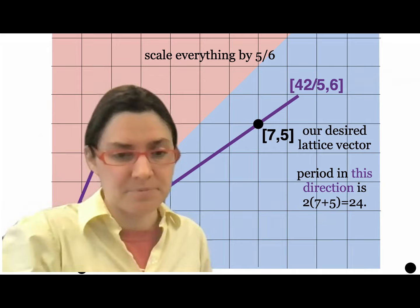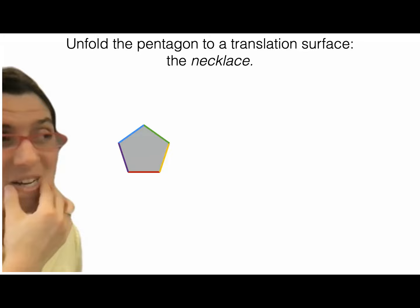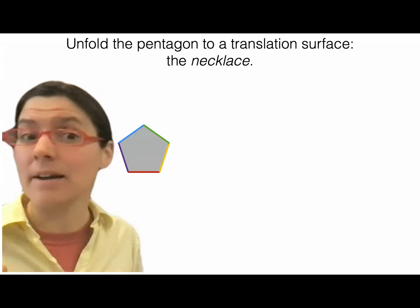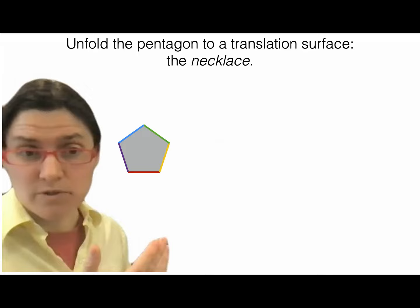The square is cool and all, but it's been understood since the 1800s. How about the regular pentagon? We unfolded our square billiard table into a square torus, which was useful. Let's try to get a surface from the regular pentagon.